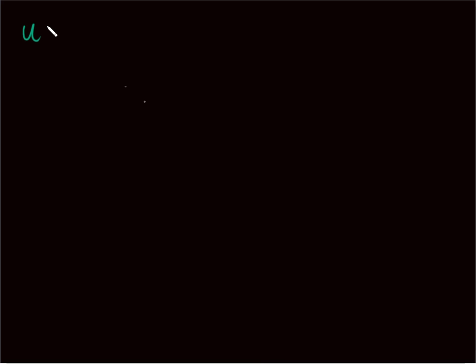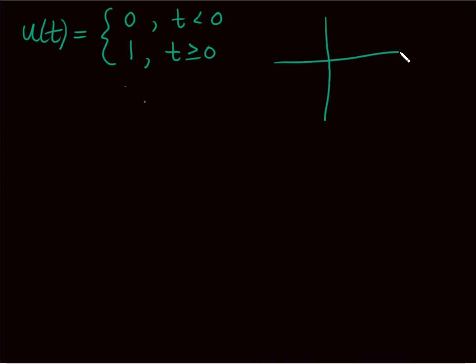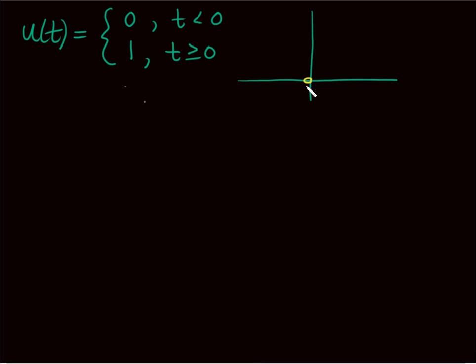One thing I want to talk about is an example of a function called a step function. This step function u of t is 1 when t is greater than 0, and 0 if t is less than 0. The graph shows that if t is less than 0 we're at 0 with an open circle, but at 0 it jumps up to 1 and stays at 1. So I actually do have a Laplace transform that exists for this function.